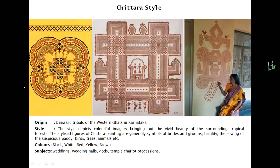Then you have the Chitra style. If you already know Kalighat painting, the Chitra style seems very similar — but the key difference is that while Kalighat talks about daily life, Chitra style restricts itself only to weddings, wedding halls, and chariot processions. This originated in northern Karnataka and spread across the entire state. It's made using only one or two colors — yellow, red, brown, and black — with a maximum of two to three colors used in combination. It originated from a tribal group in the Western Ghats.